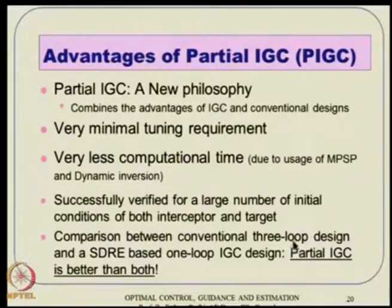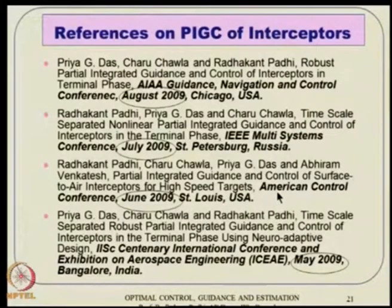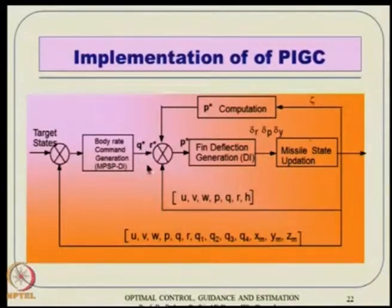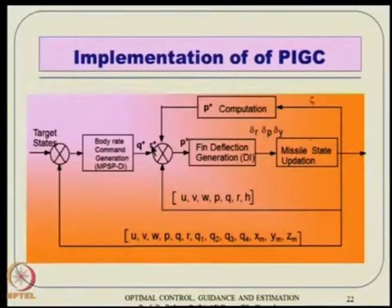Comparison between conventional three-loop and HDRI-based one-loop design is also done. The conclusion is that partial IGC happens to be better than both. Implementation of partial IGC is typically done this way: body rate generation using MPSP or MPSC gives us desired body rates q_star and r_star. The idea is to nullify the errors in the two channels (two axes) and maintain zero error. We will have an MPSP phase and then if any small time is left over, a DI-based guidance phase.